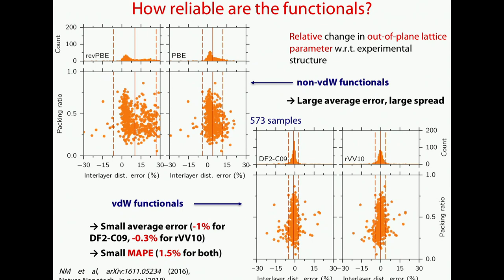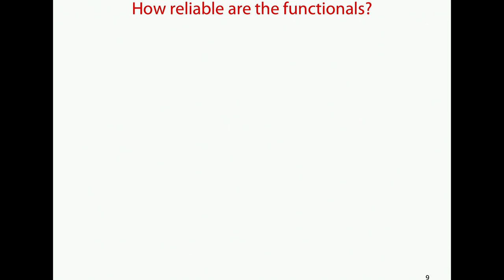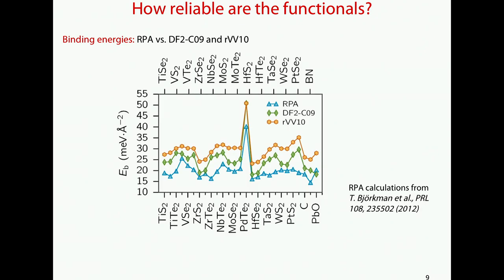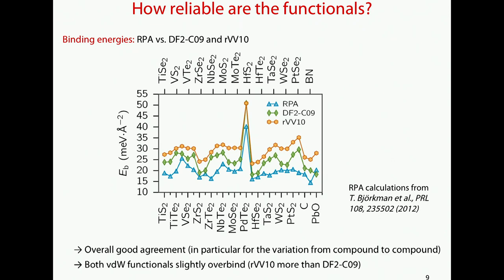This gives the first confidence in what we are doing, but you need a bit more because we are going to compute energetics and binding energies. So we also compared with state-of-the-art reference binding energies from RPA on well-known layered compounds. Essentially the compound-to-compound difference is more or less the same as the RPA with the van der Waals functionals. So we are pretty confident that we can use the van der Waals functionals also for the energetics.